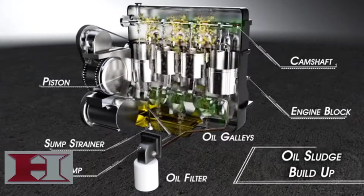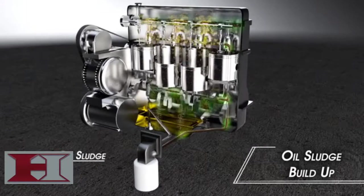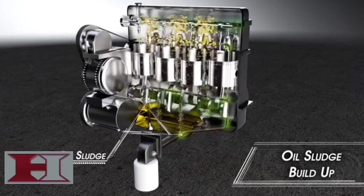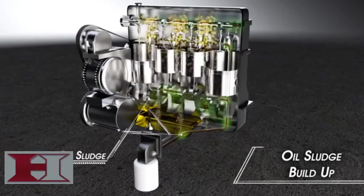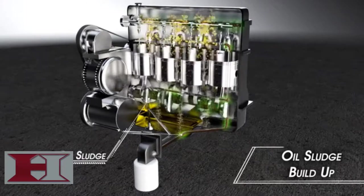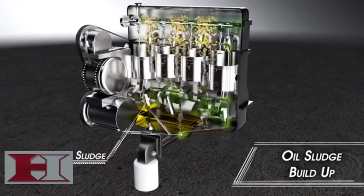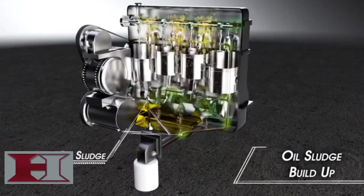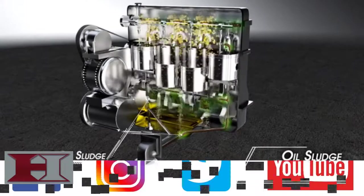When the engine oil gets dirty, deposits start forming in the oil galleys known as oil sludge. The sludge blocks oil from flowing to the moving parts and starves them of lubrication.